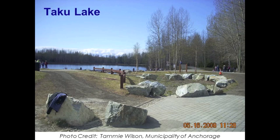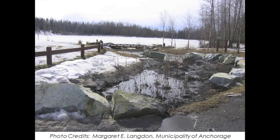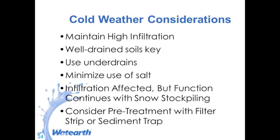Here's a rain garden constructed in Anchorage. One issue with this one is it was completely overwhelmed by runoff. What the municipality finally realized is it was designed to handle a specific contributing area, but during extreme cold weather, the storm drain inlets would basically freeze over. So runoff would bypass all those inlets and enter the rain gardens. You want to make sure you've included the full contributing area to the system.